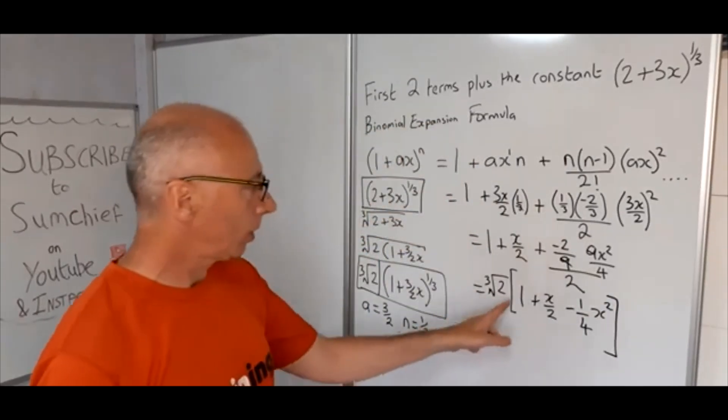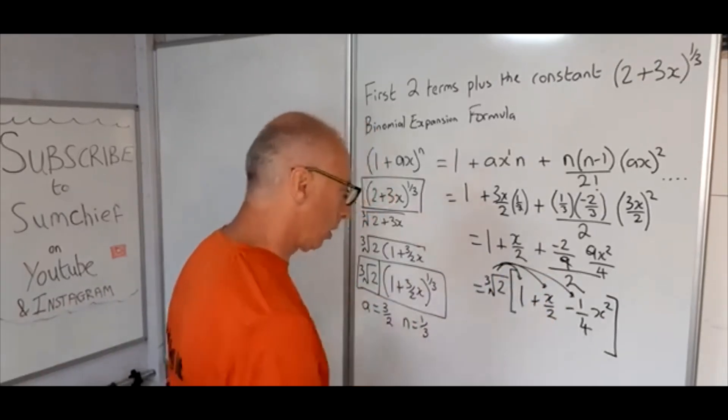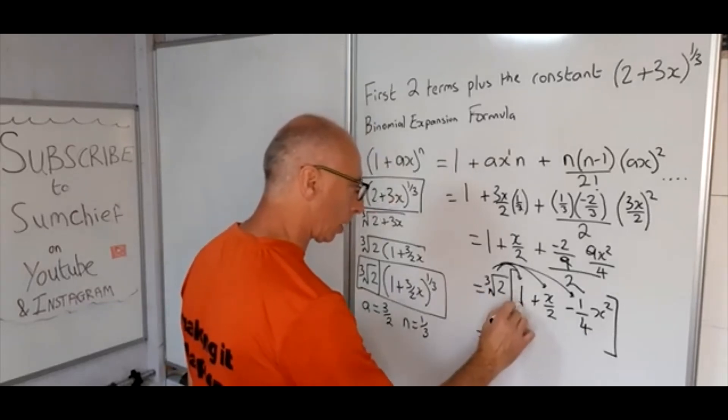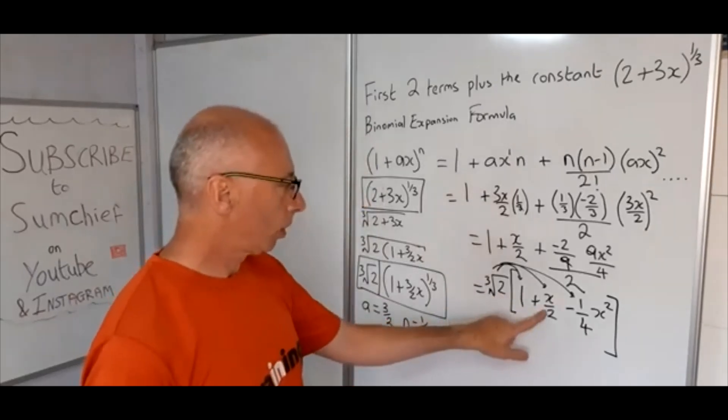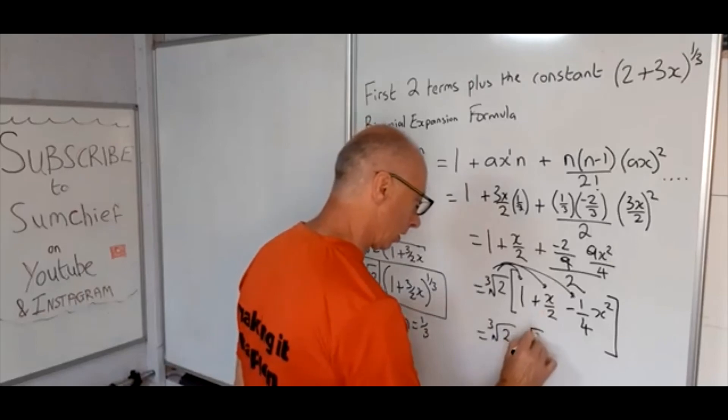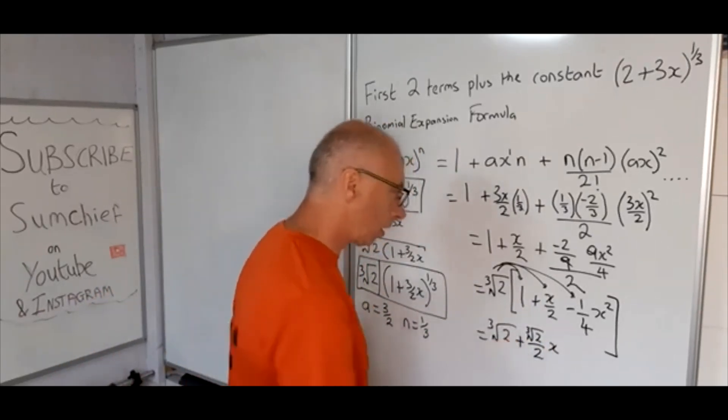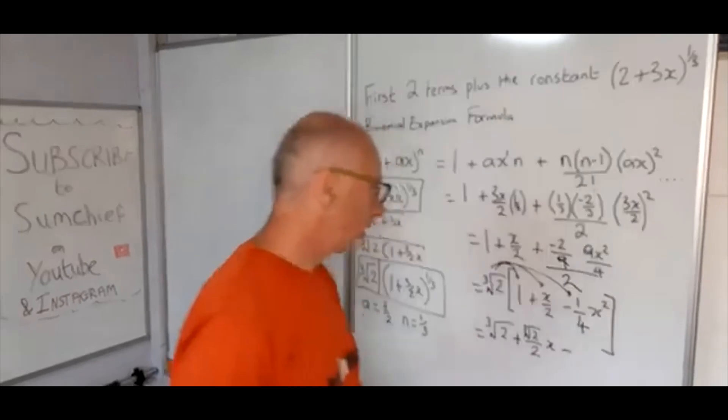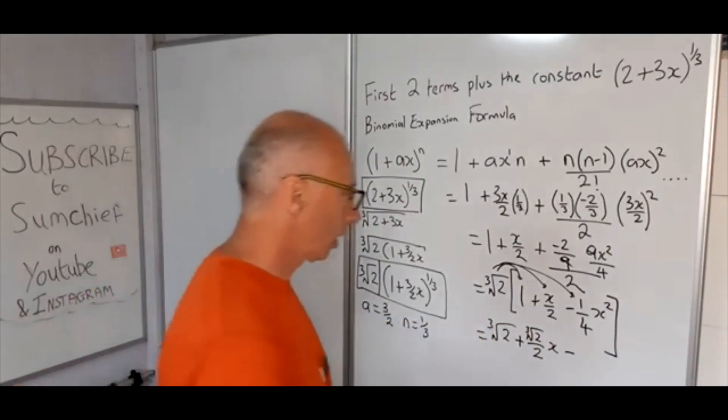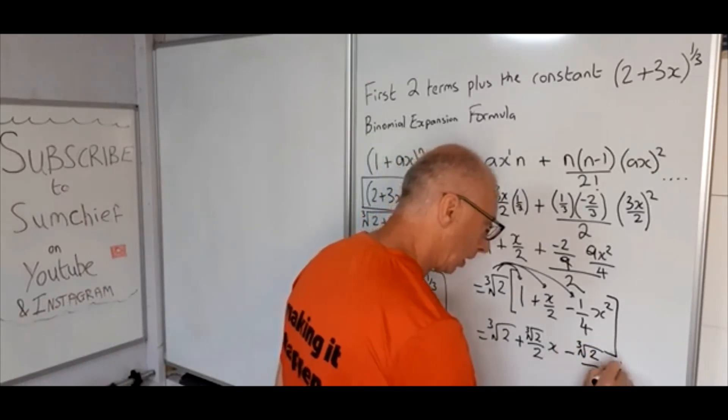Now what we need to do is distribute the cube root of 2 into all these terms. That's going to lead us to our answer. Cube root of 2 times 1, that stays cube root of 2. Cube root of 2 over 2 times x, that takes care of that one. Now the sign here stays positive, and then the minus here, minus 1/4 cube root of 2, so that just gives us cube root of 2 over 4 times x^2.